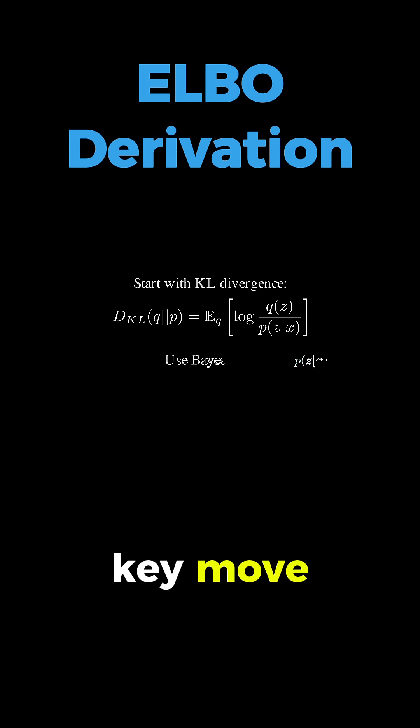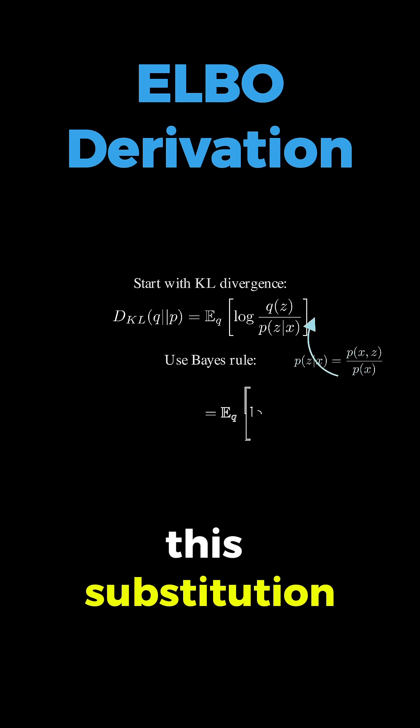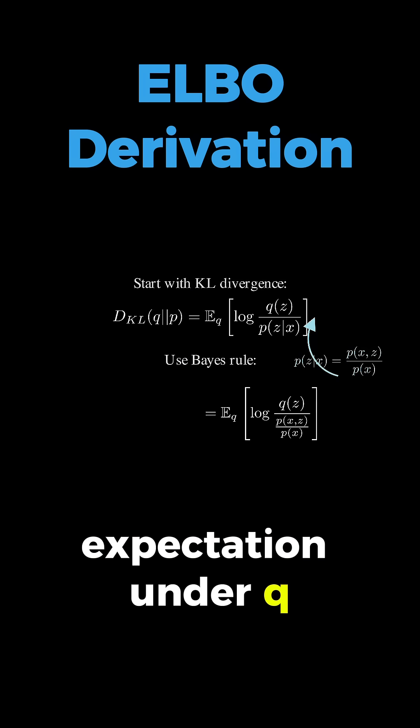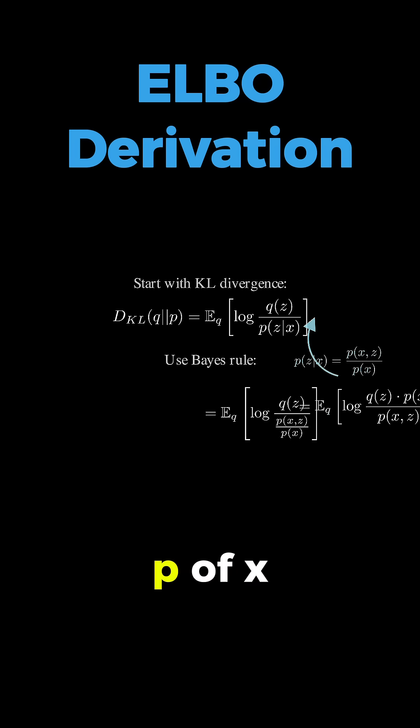And here's the key move: we use Bayes rule to substitute P of Z given X with P of X and Z divided by P of X. When we make this substitution, we get the expectation under Q of log Q of Z times P of X divided by P of X and Z.